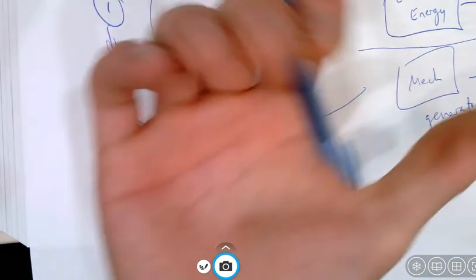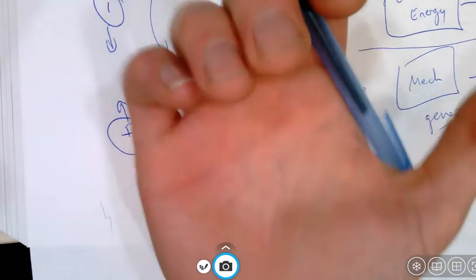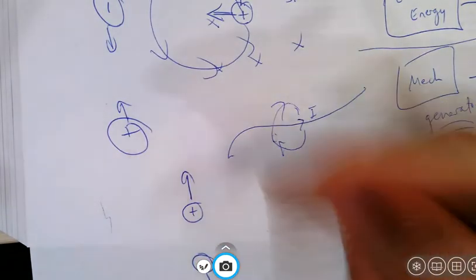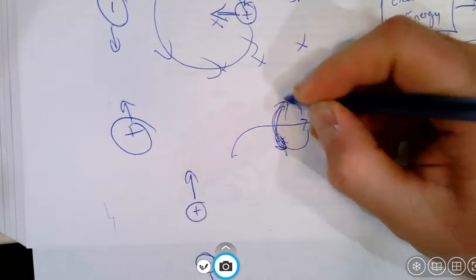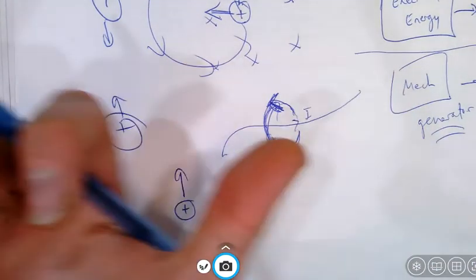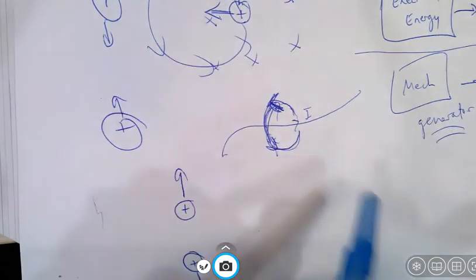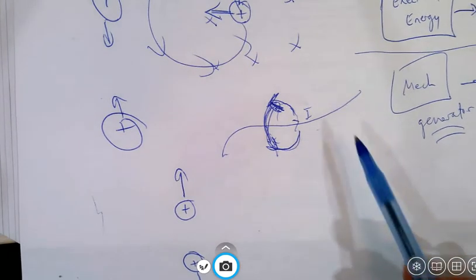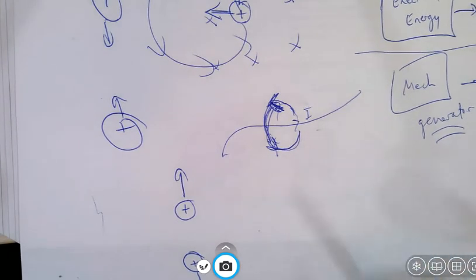My thumb points in the direction of the current and my fingers point in the direction of the magnetic field. So currents actually make a magnetic field — that's kind of surprising. The other thing is that if we had a current in a magnetic field, it also experiences a force. Those are some big ideas we'll be using in our next discussion.